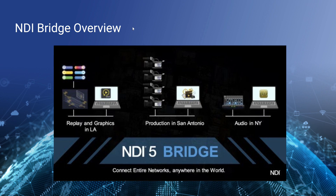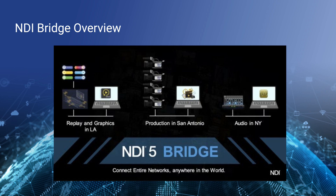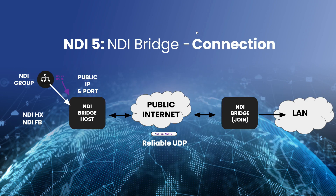One of the things you're going to learn about in this course, just announced with NDI 5.0, is something called NDI Bridge — the ability to connect two locations together that are both using NDI video sources. For example, you might have graphics and replay done in Los Angeles, production done in San Antonio, and audio production done in New York. This is becoming more common with people working remotely all over the world. When we use NDI Bridge to connect one local area network to another, imagine how cool it is to have tally lights in one city turn on when production is happening perhaps across the globe.